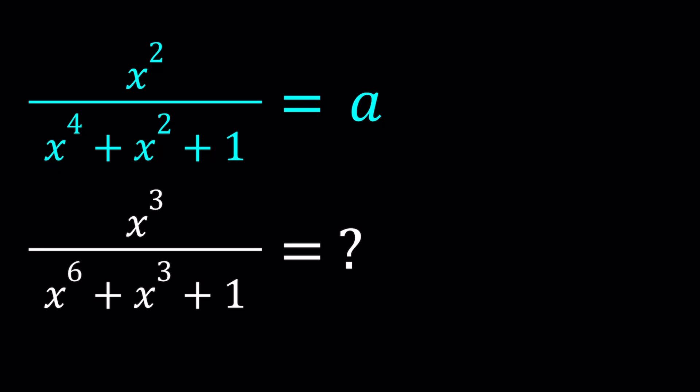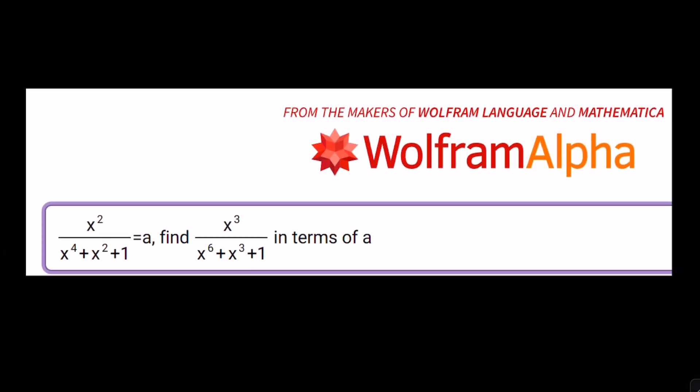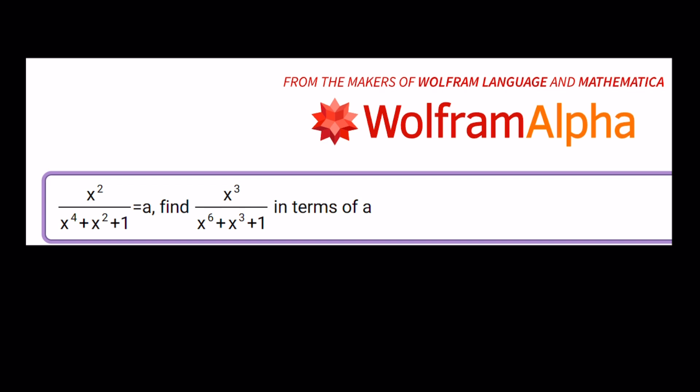I'll be presenting two methods. But before we get into those, I want to show you a couple of things. With most of these problems, I input this into Wolfram Alpha. So this was my input: x squared over x to the fourth plus x squared plus one equals a, and then find x cubed over x to the sixth plus x cubed plus one in terms of a. I guess that's clear, right?